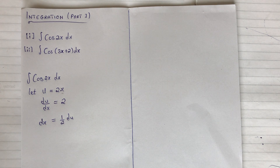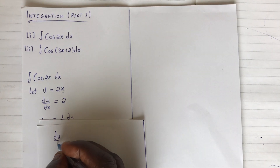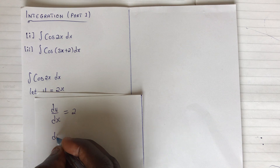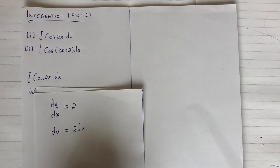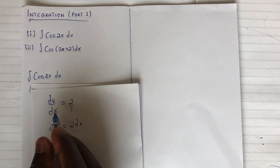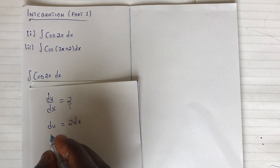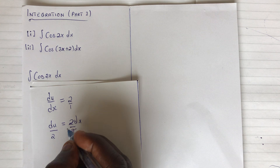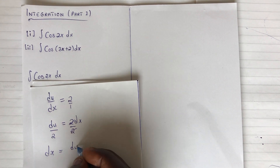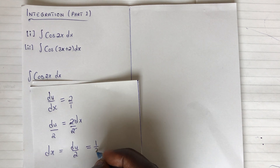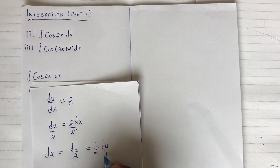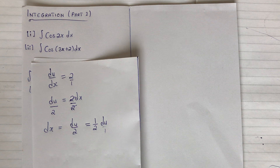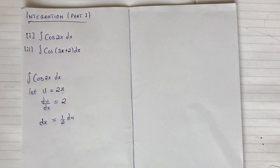Let me explain so you understand. If I have du/dx giving me 2, then when I cross multiply, I am getting du = 2 times dx. So when I cross multiply, I am getting du equal to 2 times dx. I need to make dx the subject, so I will divide both sides by 2. I have dx giving me du over 2, which is the same as 1 over 2 du.